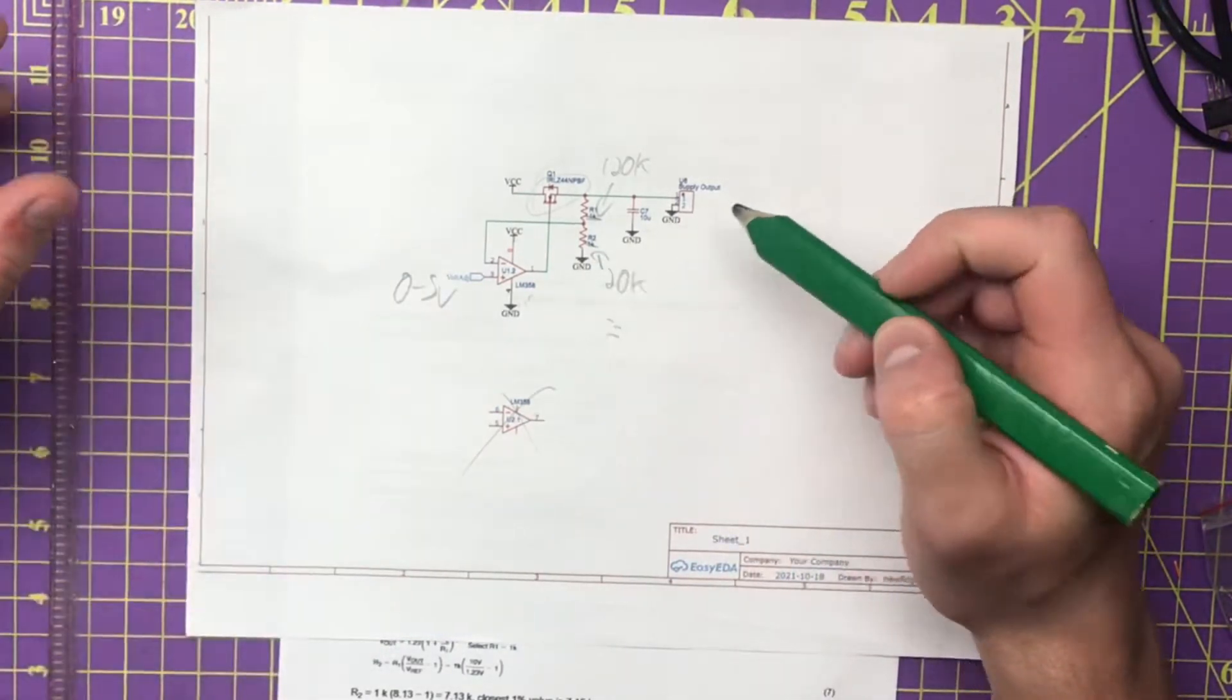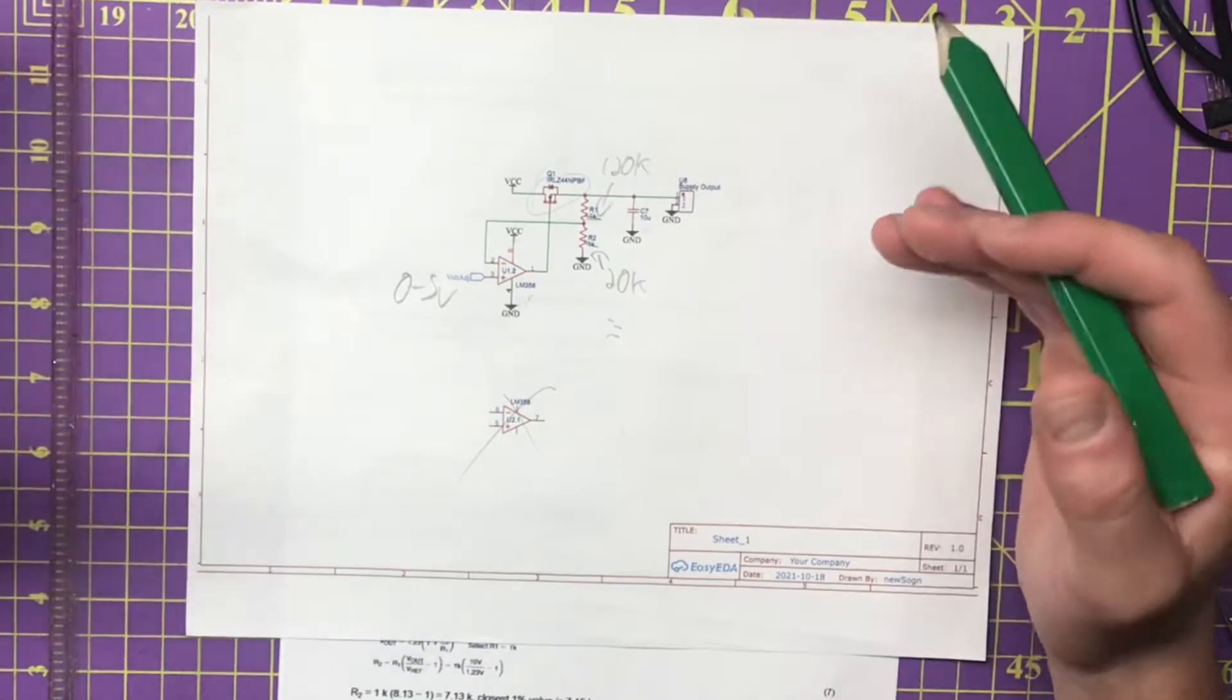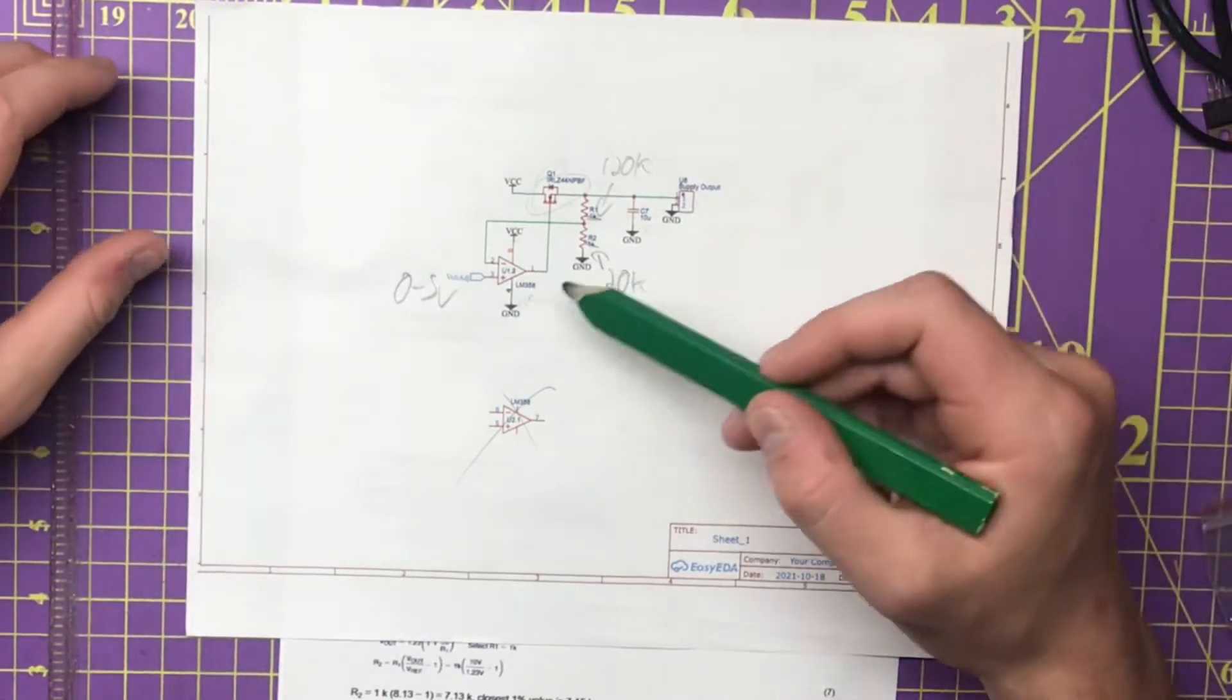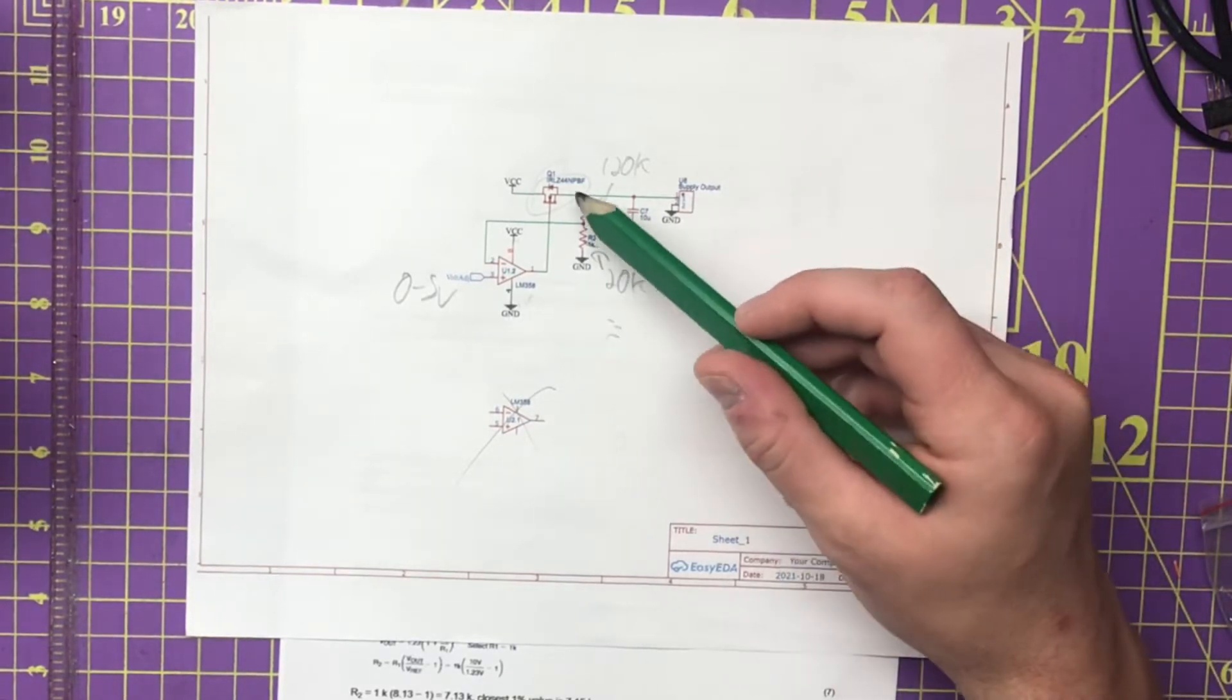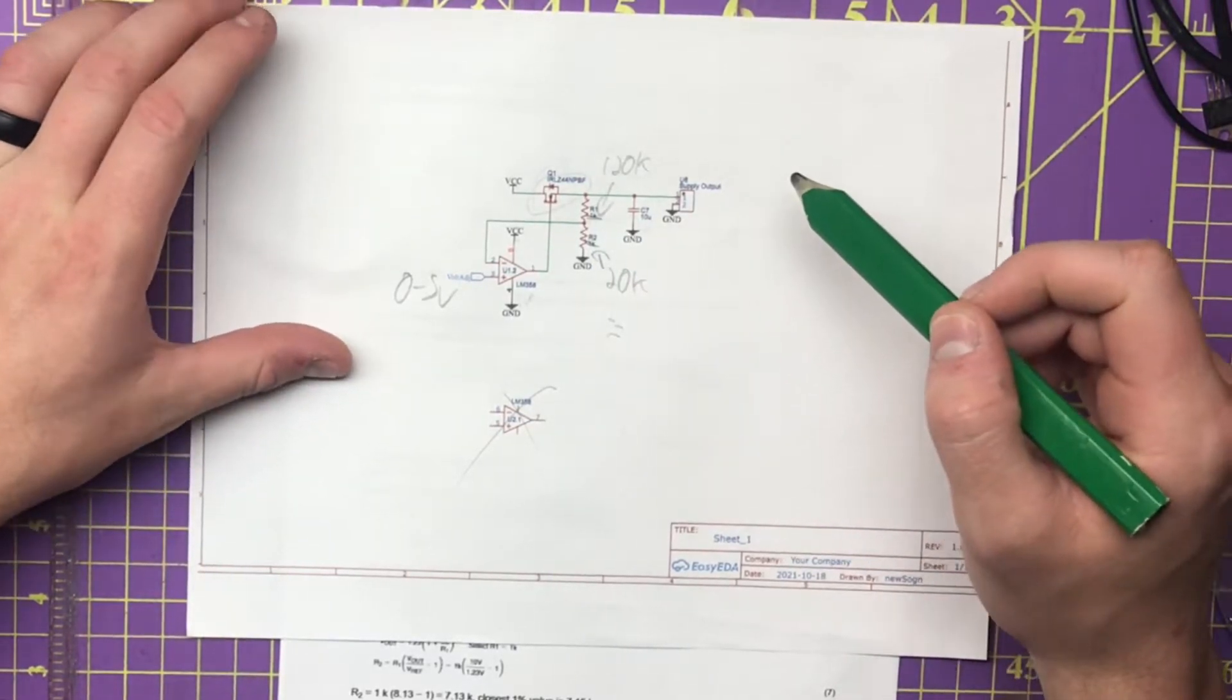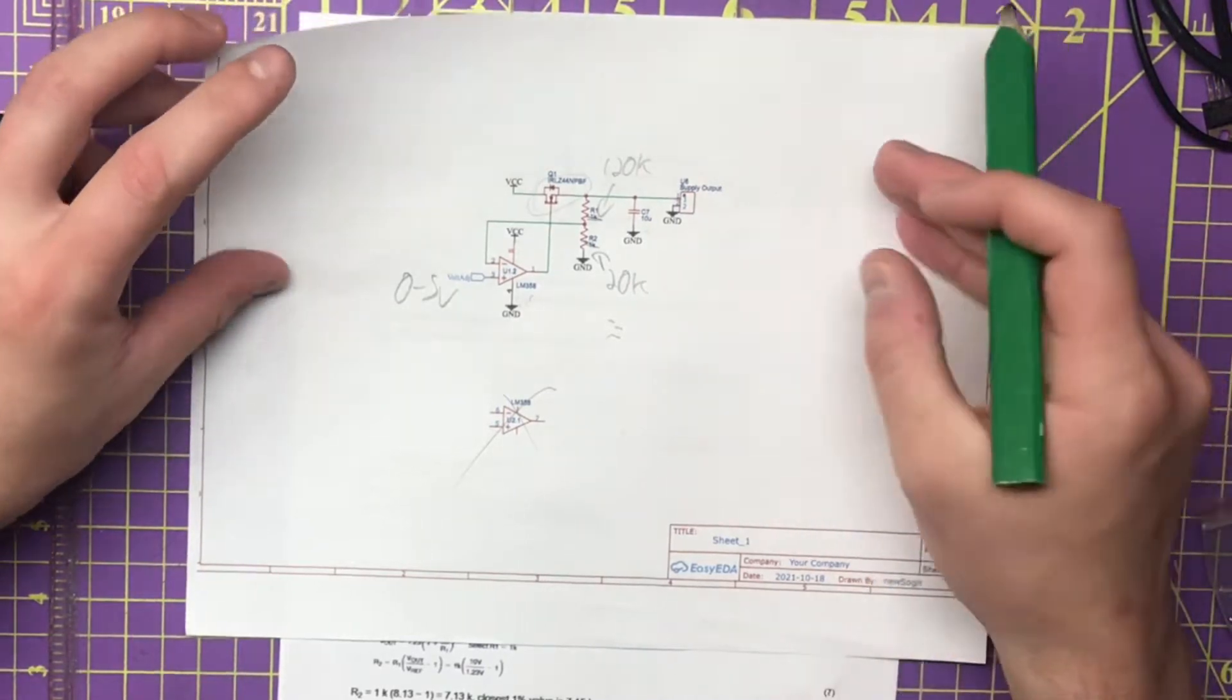So you remember this circuit from the first one. This is just our version of a jellybean linear regulator with jellybean parts. We just made a simple linear regulator with an LM358 and an IRLZ44N MOSFET.